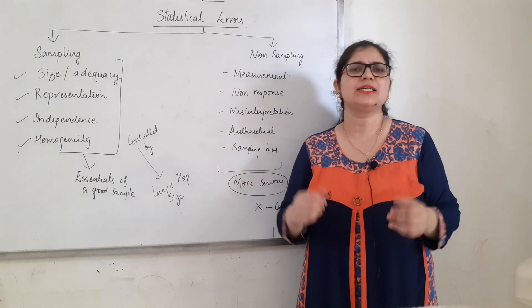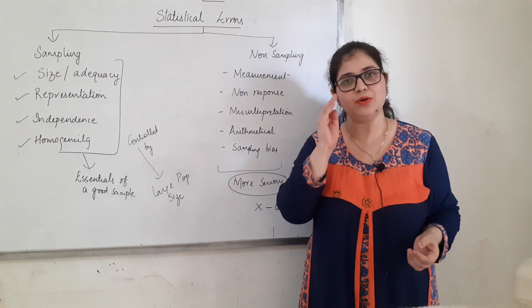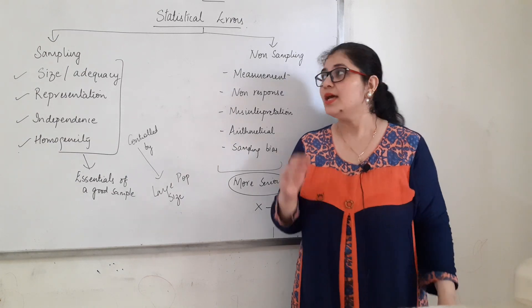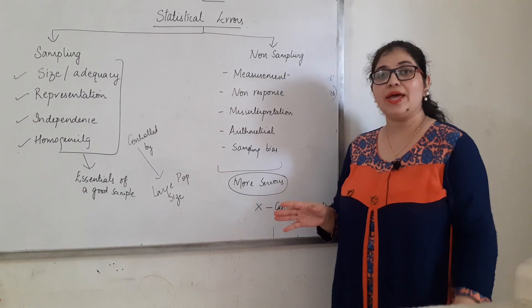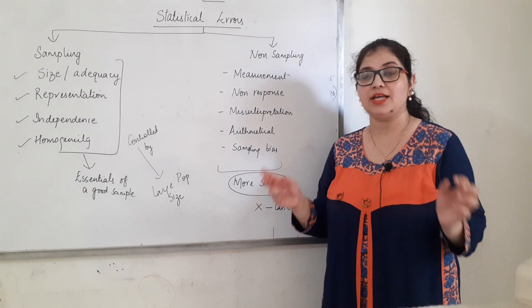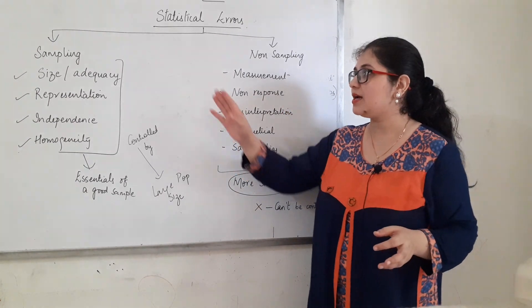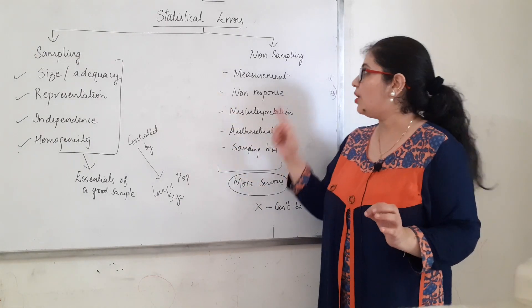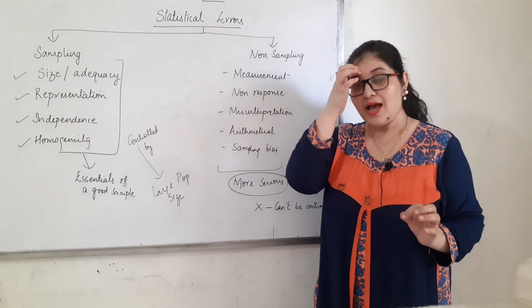Samajhna ki statistical sampling mein garbad kya ho sakti hai, ya census create karte samay kya garbad ho sakti hai — what are the errors? Toh errors jo hai, jo daltiyaan hai statistical errors, there are two types: ek hai sampling error, aur ek hai non-sampling error.